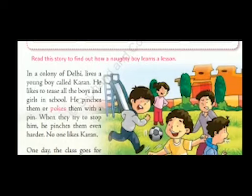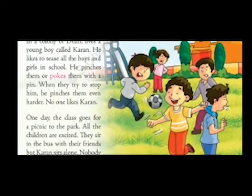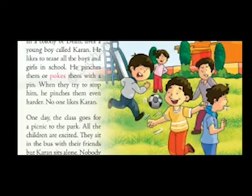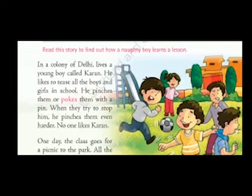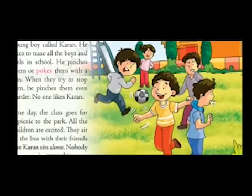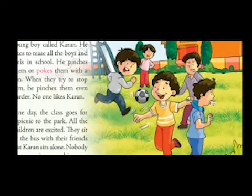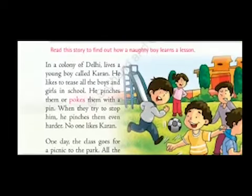Let us look at this picture and understand. There are five children playing in a garden area, and among them there is one boy holding the collar of another boy, which is why the other children are getting angry. This happens in our regular play time also — when someone is troubling others, the other friends get angry. It is clearly seen that the boy with the red pants must be Karan.